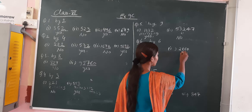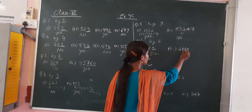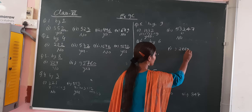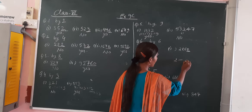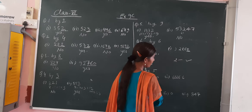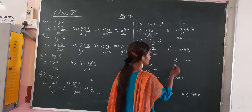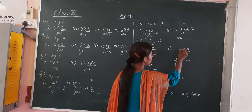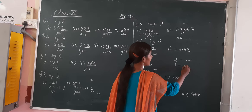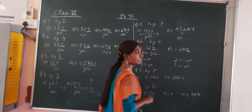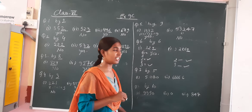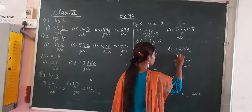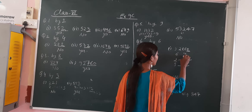Now check this one also. The unit digit is 0, which means it is divisible by 2 — yes. Check the digit sum: 2 plus 1 is 3 — yes, it is also divisible by 3. That means it will also be divisible by 6. So your answer is yes.